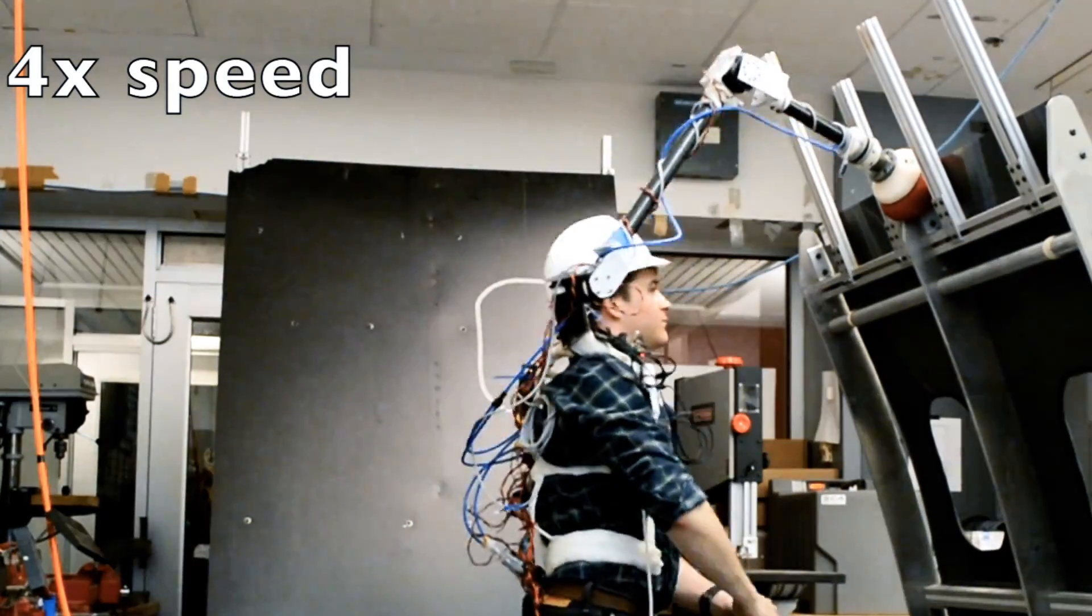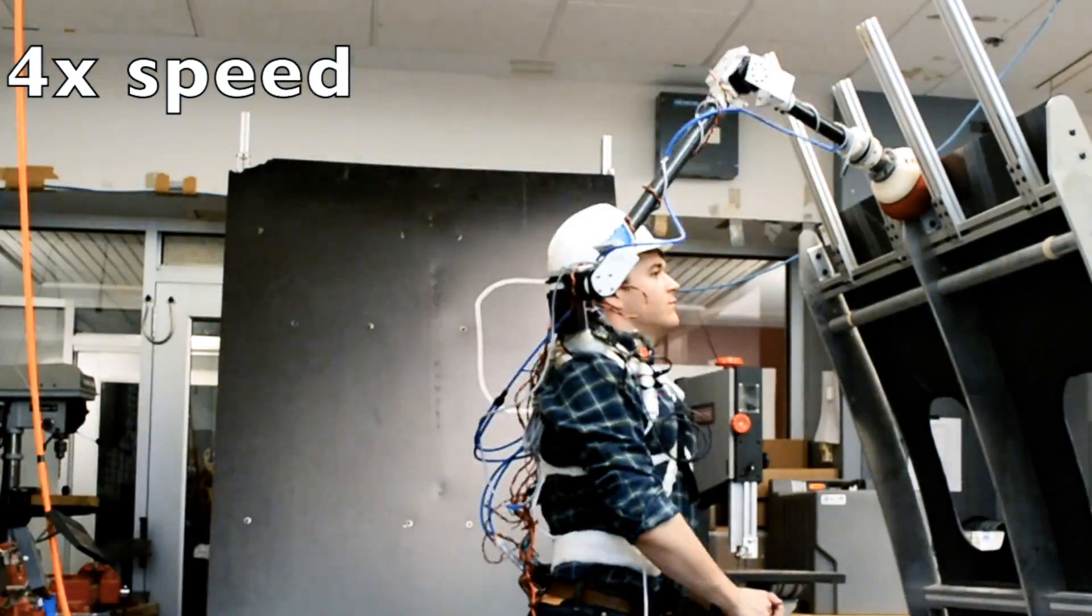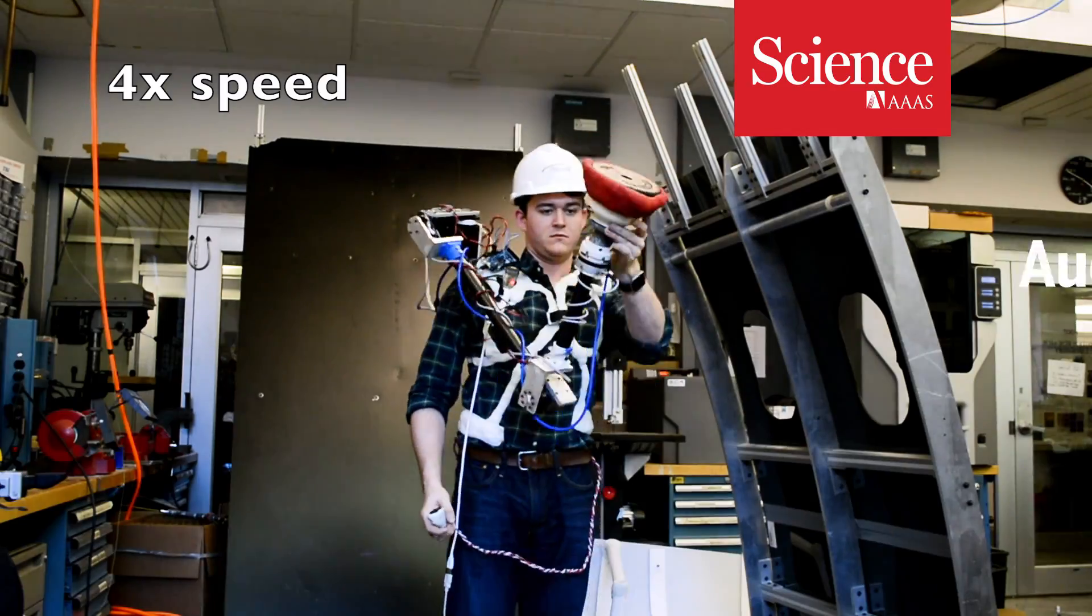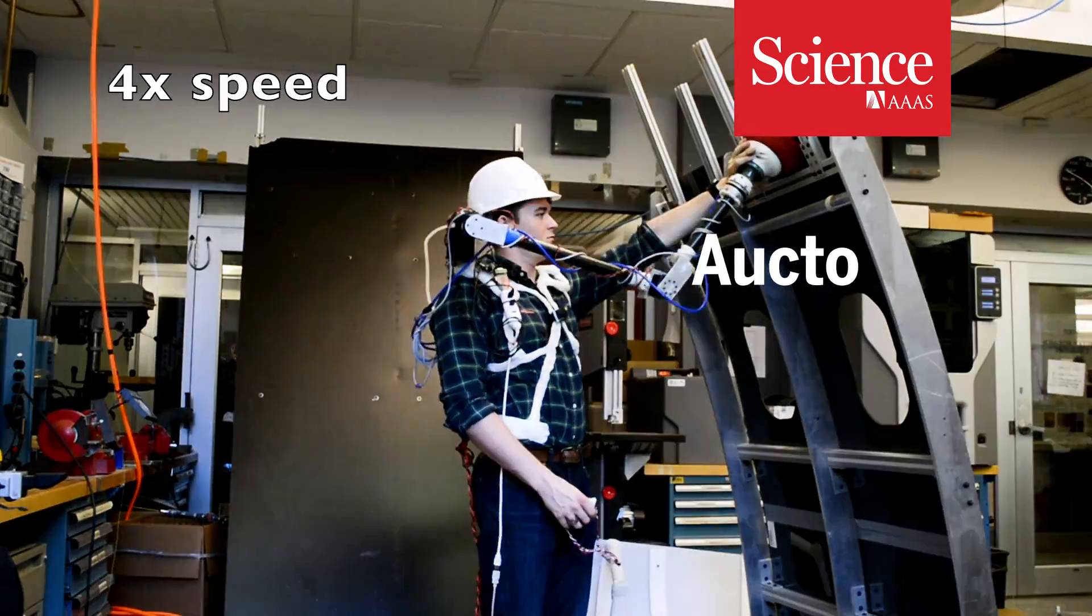Instead of asking a friend for a hand, what if you had an extra arm? Researchers have created a robotic limb called Octo that can be attached to the shoulder.